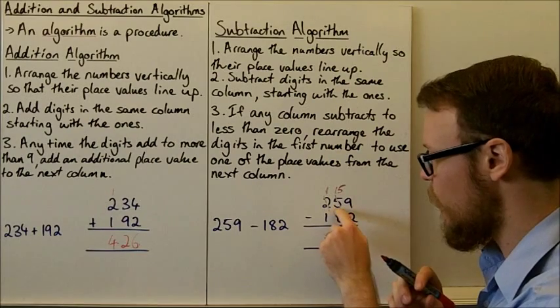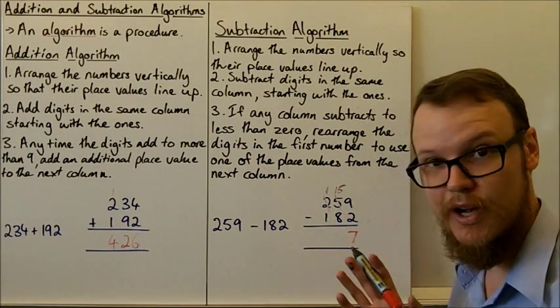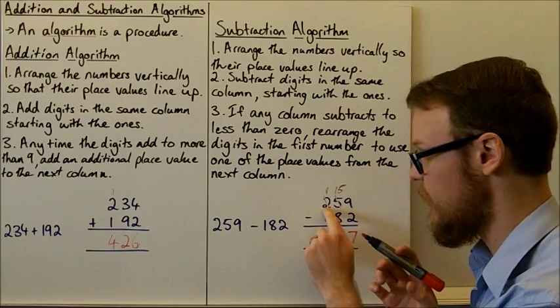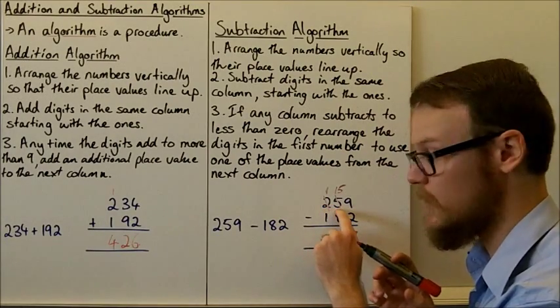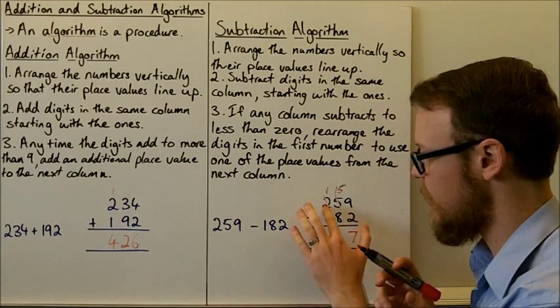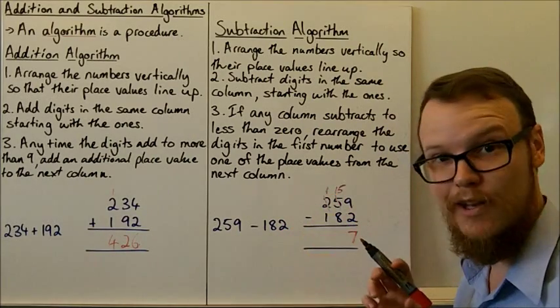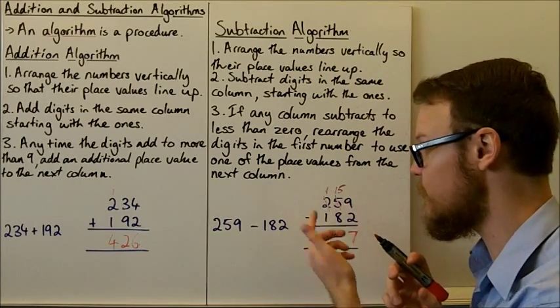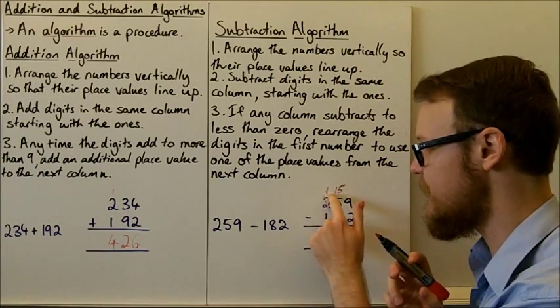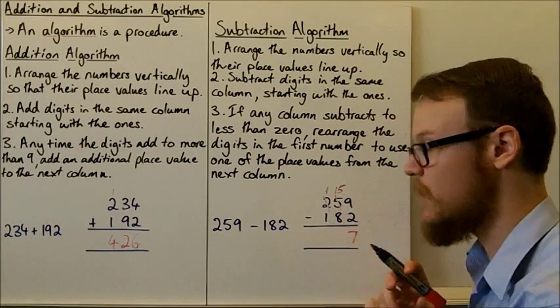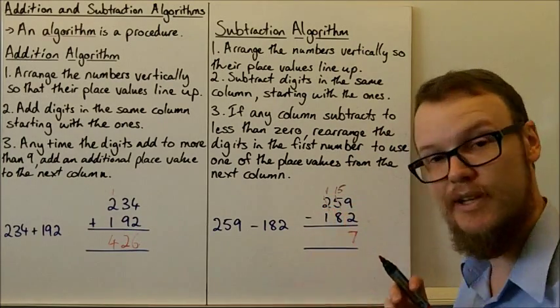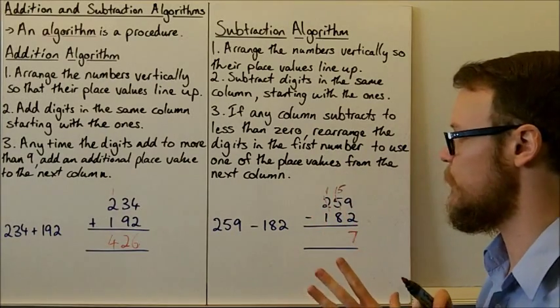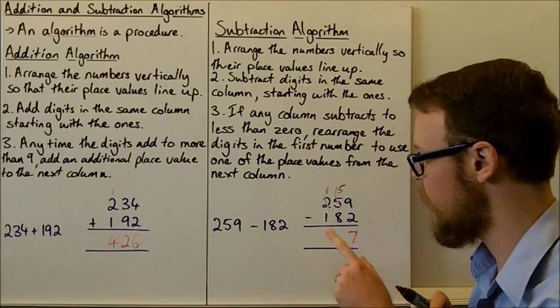So this is the same as saying, well, 250, the 2 and the 5 here, 200 and the 50 is 2 lots of 100 plus 1 lot of 50. That's the same as saying, well, hey, I've got 1 lot of 100 plus 150 or 15 lots of 10, 150. They add to the same amount. So 100 plus 150 is the same as 200 plus 50. So they're exactly the same number. We're not changing the number at all. We're just rearranging them.